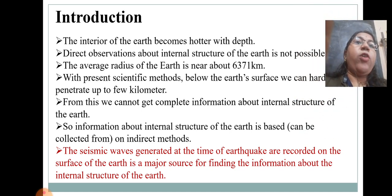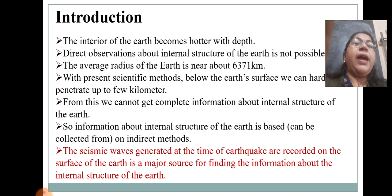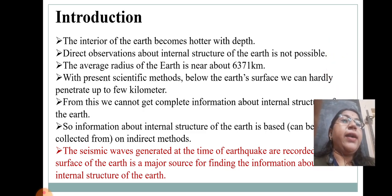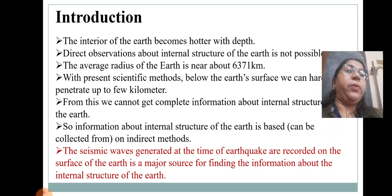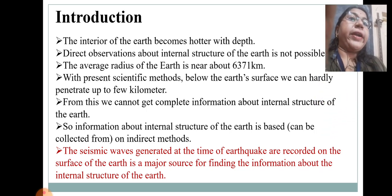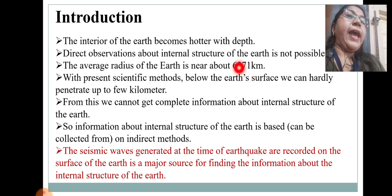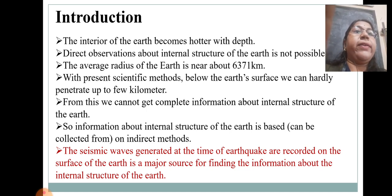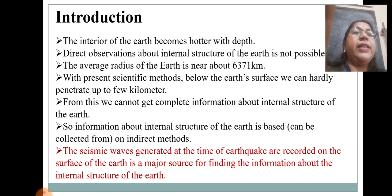The interior of Earth becomes hotter with depth. Direct observation about the internal structure of Earth is not possible. With present scientific methods, we can barely penetrate a few kilometres below Earth's surface. The average radius of Earth is taken as 6371 kilometres, so we cannot get complete information about the internal structure from this alone. The information about the internal structure of Earth is therefore based on indirect methods.